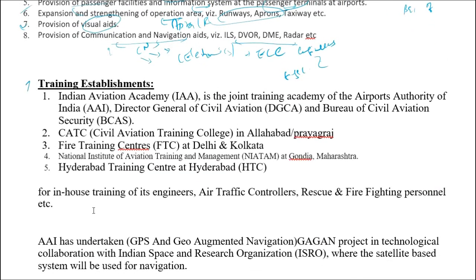AAI has its own in-house training centers. The first important one is the Indian Aviation Academy (IAA), which is a joint training academy of AAI, DGCA, and BCS - making it a key training center for Indian aviation. Next is CATC - Civil Aviation Training College - located in Allahabad (Prayagraj), where ATC and CNS trainings are conducted.